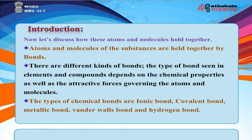The types of chemical bonds are ionic bond, covalent bond, metallic bond, van der Waals bond, and hydrogen bond.